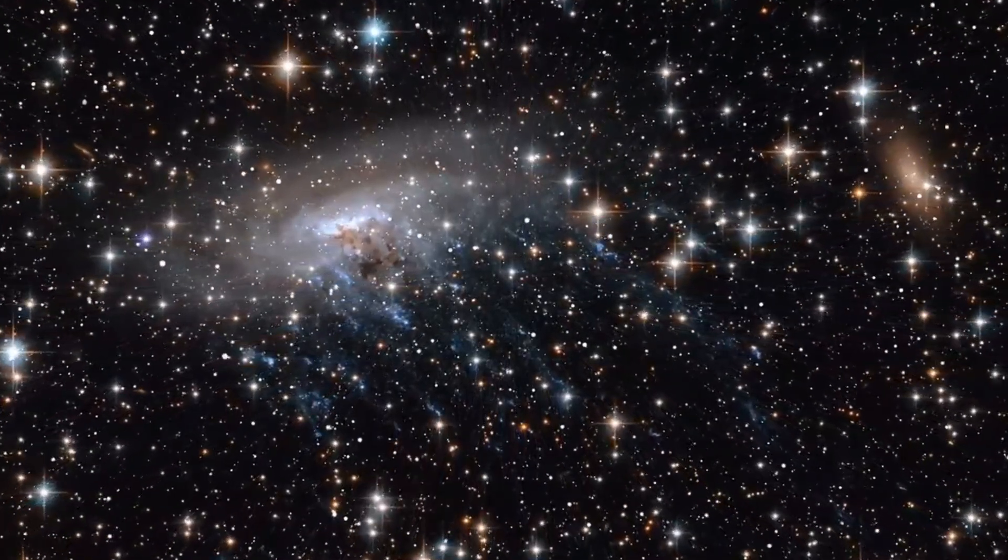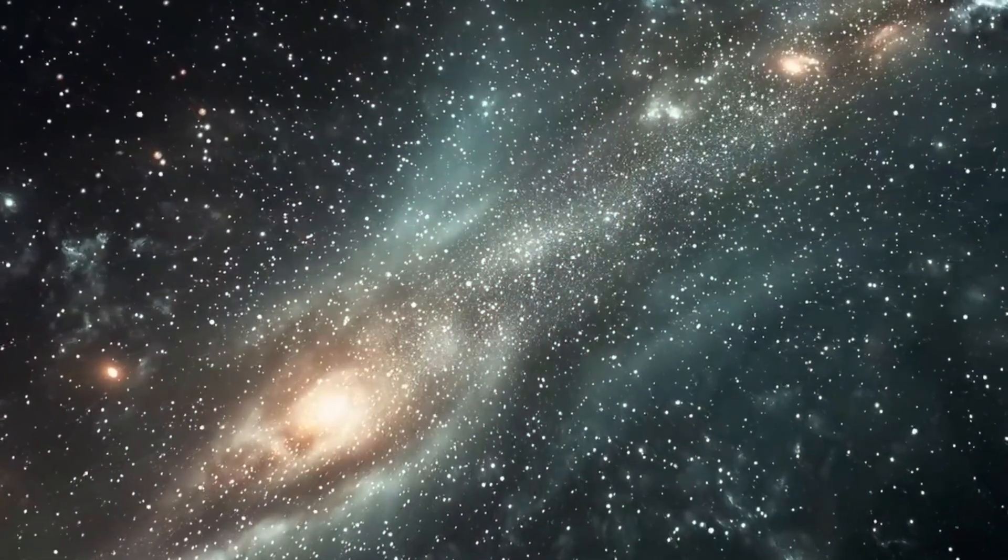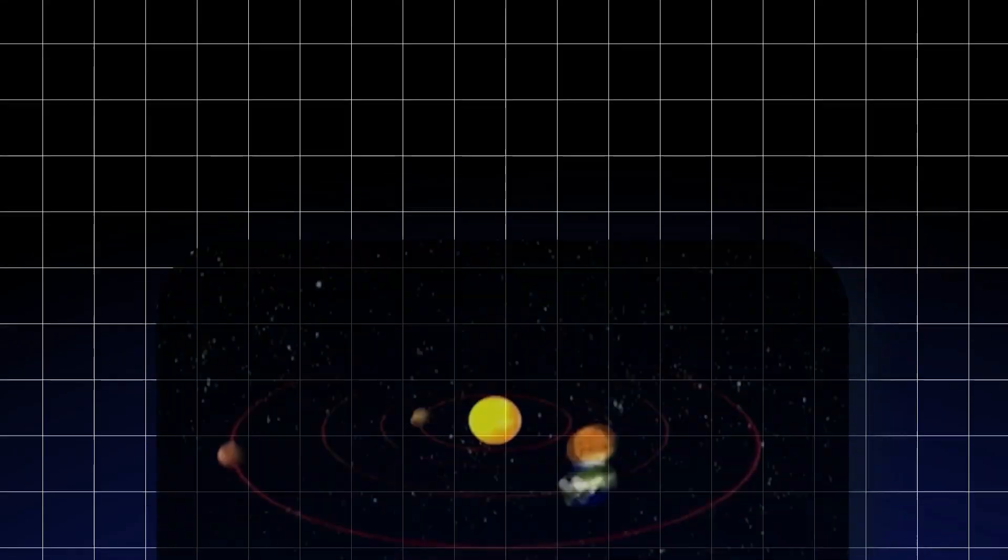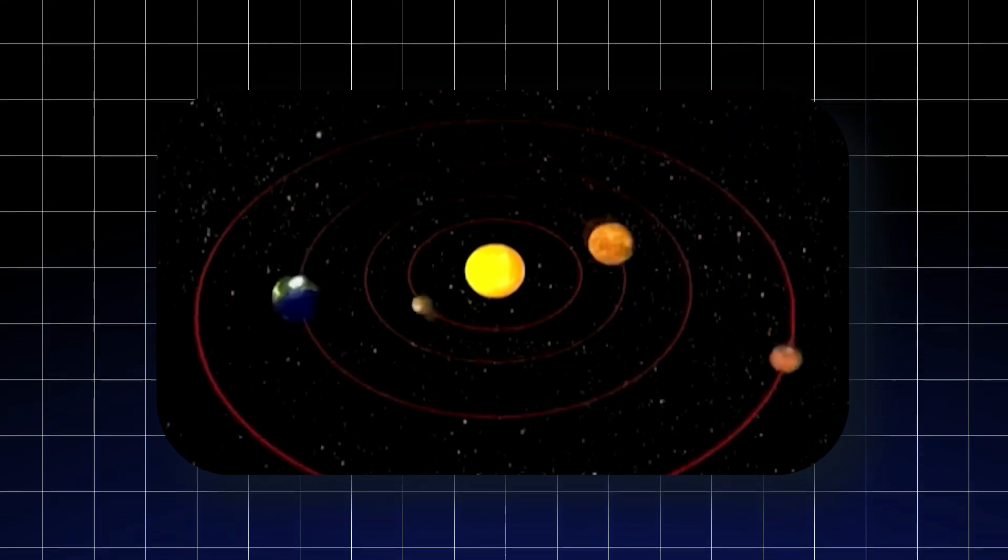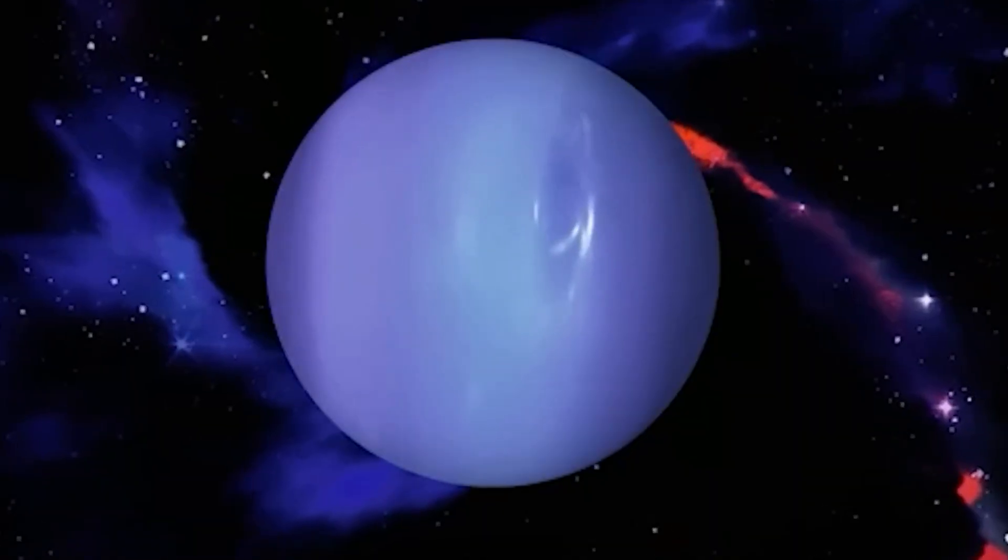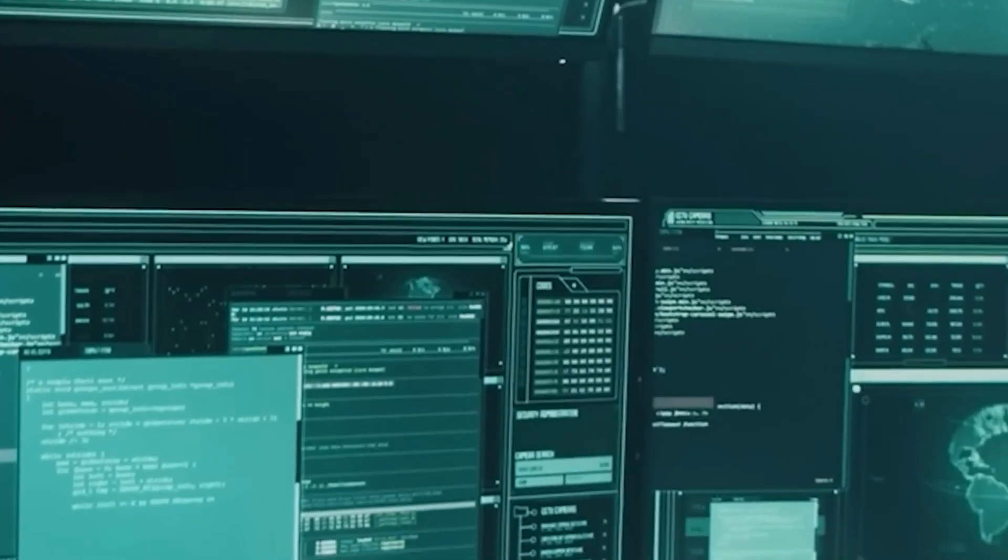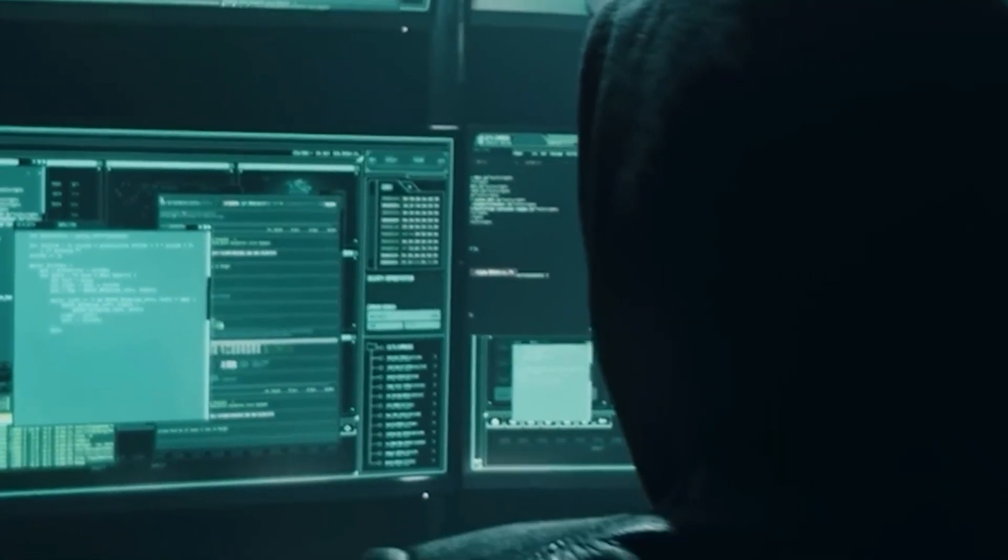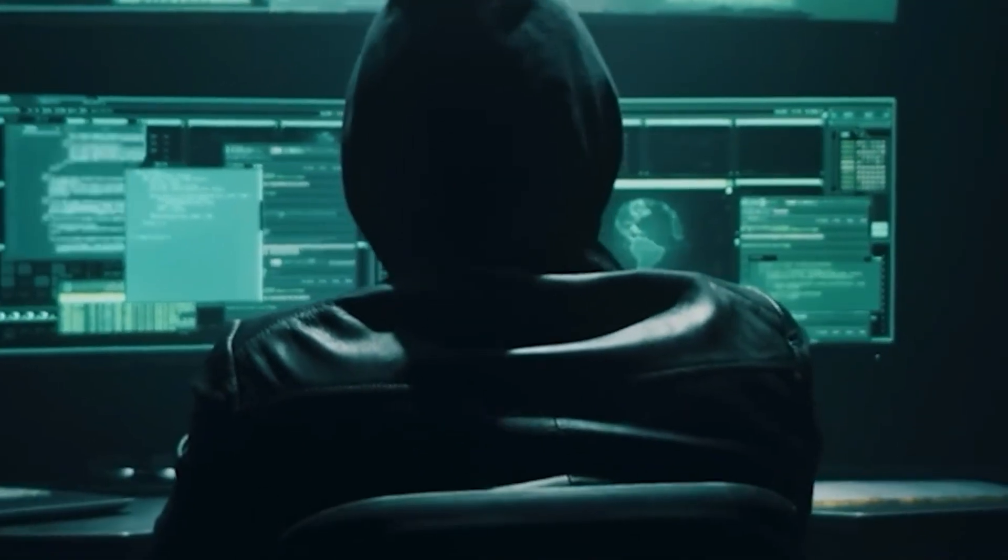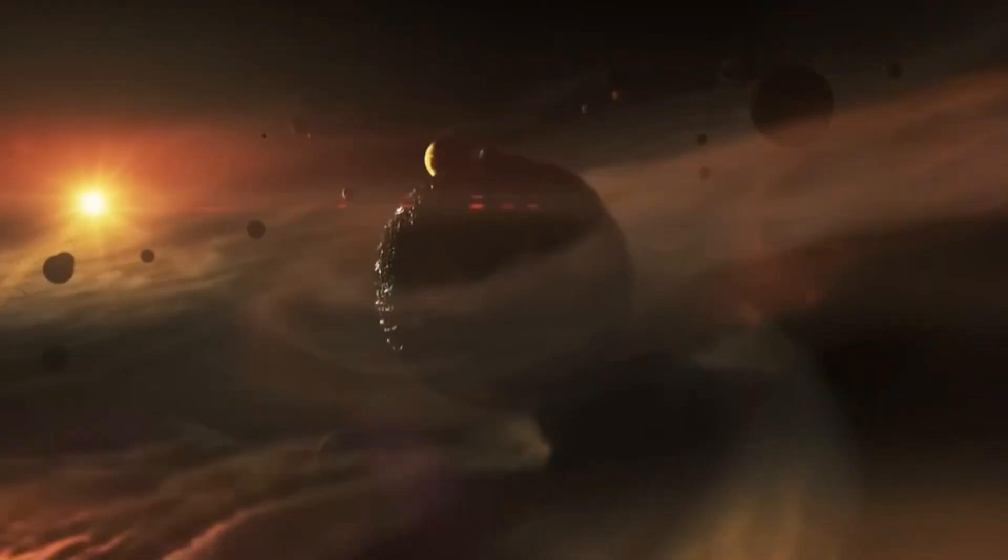Might there be more massive bodies in similar orbits, possibly remnants from the solar system's formation, or even rogue planets captured from interstellar space? The detection of Planet Nine not only validates decades of hypotheses, but also throws open the gates to a deeper understanding of solar system evolution.